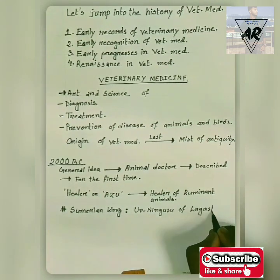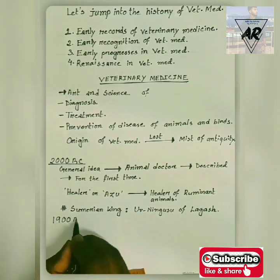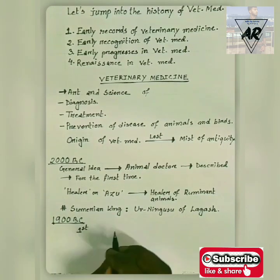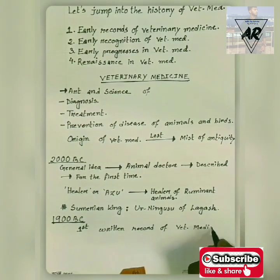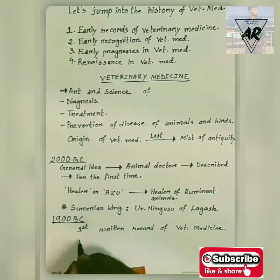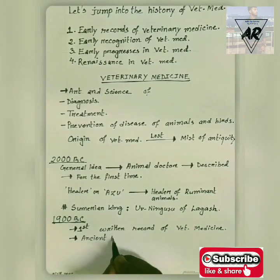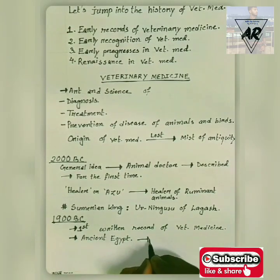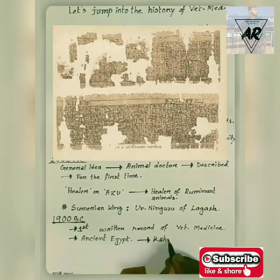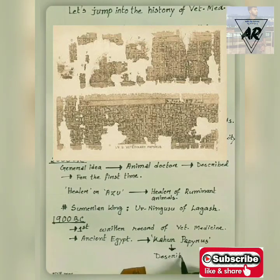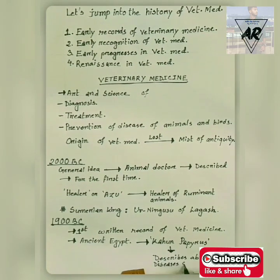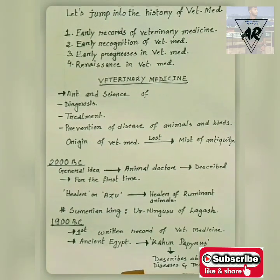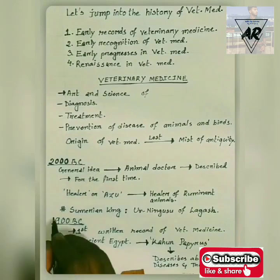Moving down to 1900 BC, the first written record of veterinary medicine from ancient Egypt was provided by the Kahun Papyrus. The oldest veterinary publication is part of the Kahun Papyrus, which describes a number of animal diseases and a veterinary-type approach to animal treatment.